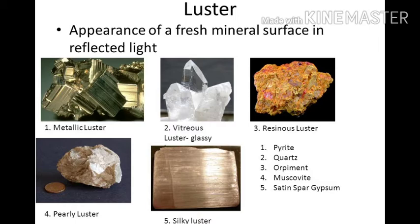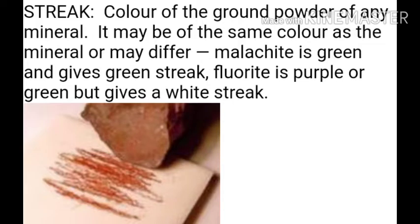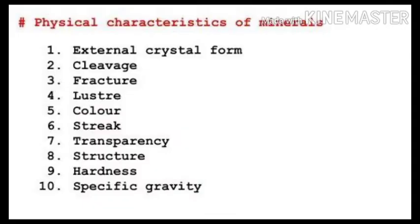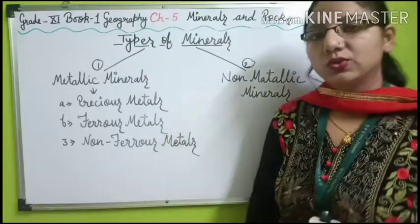Fifth, color — some minerals have a characteristic color determined by their molecular structure, while some are colored by impurities. Sixth, streak — the color of the ground powder of a mineral; it may be the same color as the mineral or may differ. For example, malachite is green and gives a green streak, while fluorite is purple or green but gives a white streak. Other characteristics include transparency, hardness, and specific gravity.